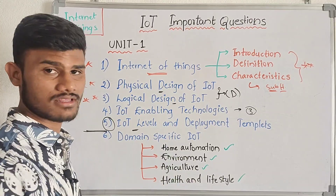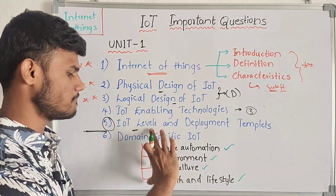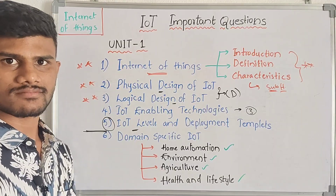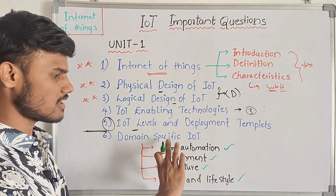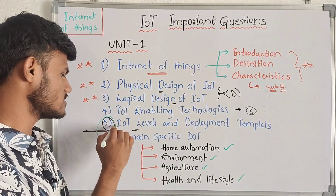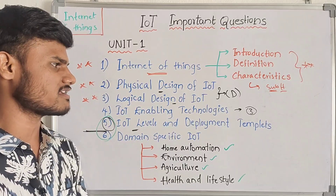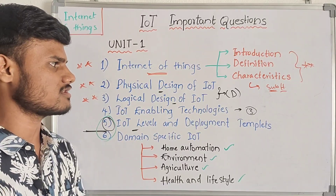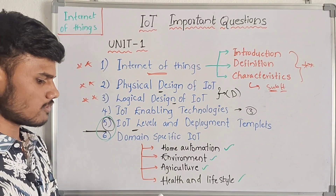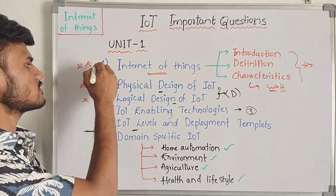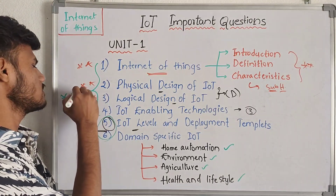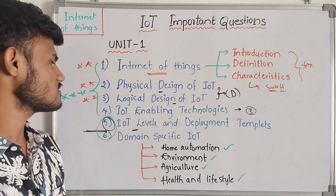So we have this domain-specific IoT. Choose two questions — choose four questions. You need to choose four questions without fail. This is for 10 marks.